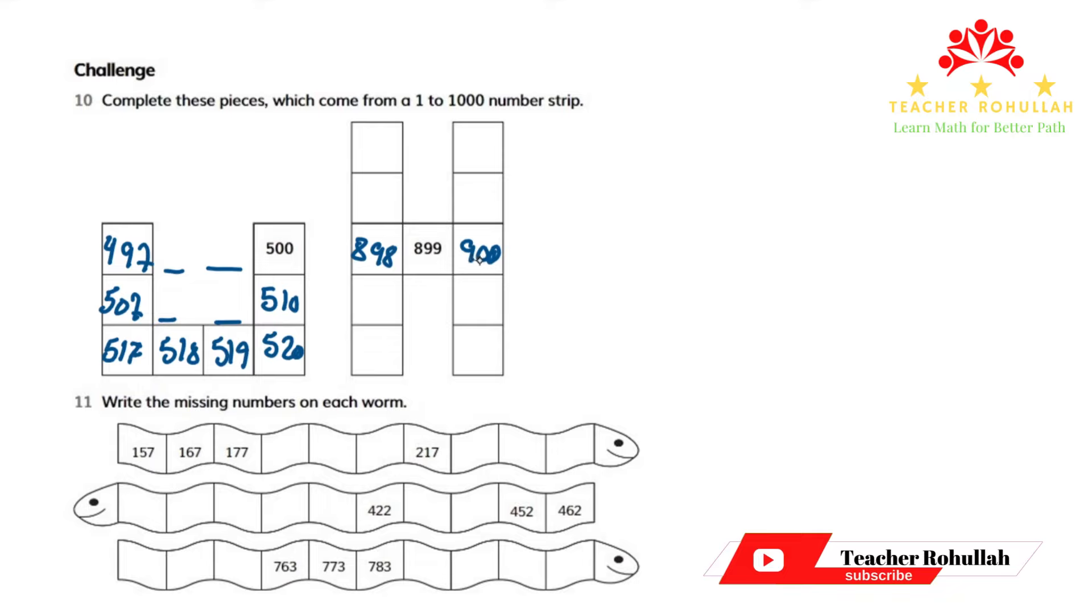So above 900, we will have 890. Above 890, we will have 880. And below 900, we will have 910, then 920.